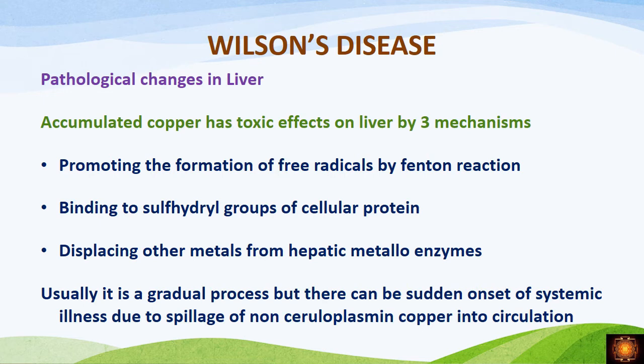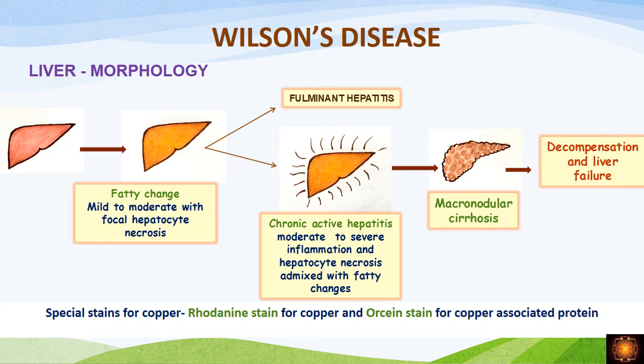In the liver, damage is caused by copper through three mechanisms: first, free radical injury; second, copper combines with sulfhydryl groups of cellular proteins causing damage; and third, it displaces metals from hepatic metalloenzymes making these enzymes non-functional. Because of all three mechanisms, we have damage in the hepatocytes.